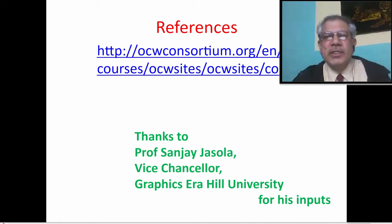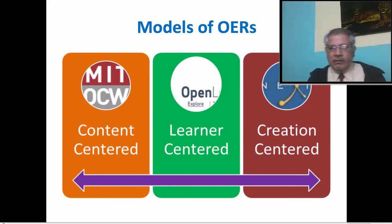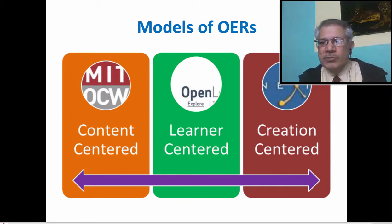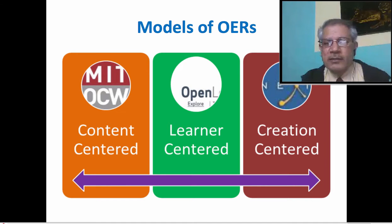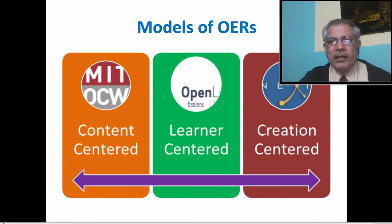These are some of the references. On the basis of the survey, you can find that there are various models of open educational resources. Some are content-centered, some are learner-centered, and some are free-centered. There are examples like MIT, Coursera, or OpenLearn of the UK, and Rice University Connections.